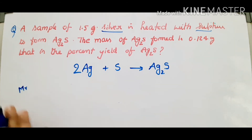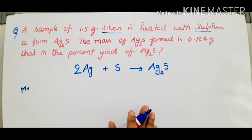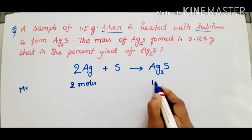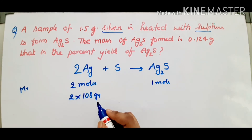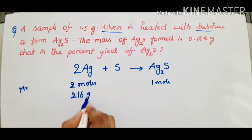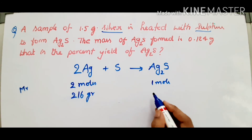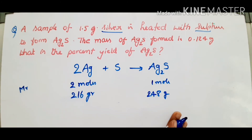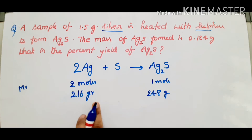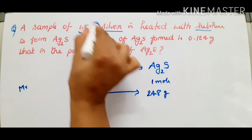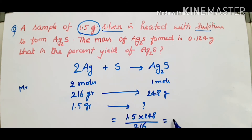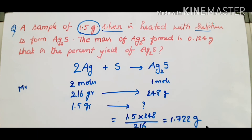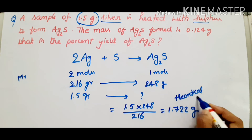MR — relative molecular masses. Silver's atomic weight is 108, but 2 moles means 2×108 = 216 grams of silver. 216 grams of silver reacts to give 248 grams of silver sulfide. So 216 grams of silver gives 248 grams of silver sulfide. With 1.5 grams of silver: cross multiplication gives 1.5×248÷216 = 1.722 grams, which is the theoretical yield.